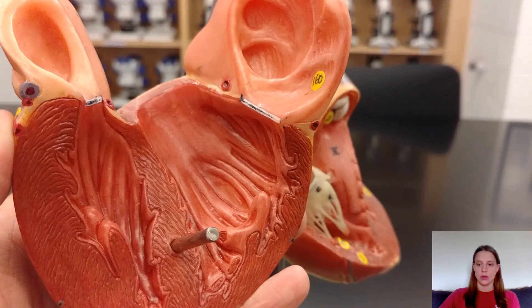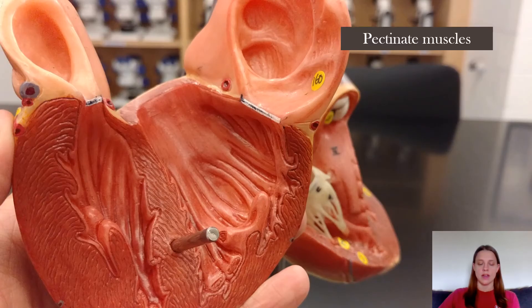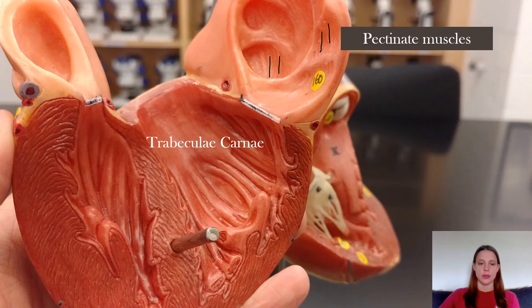On this side of the heart we have the pectinate muscles, which are the little ridges you can see in here. We also have the trabeculae carnae, which are these ridges here.